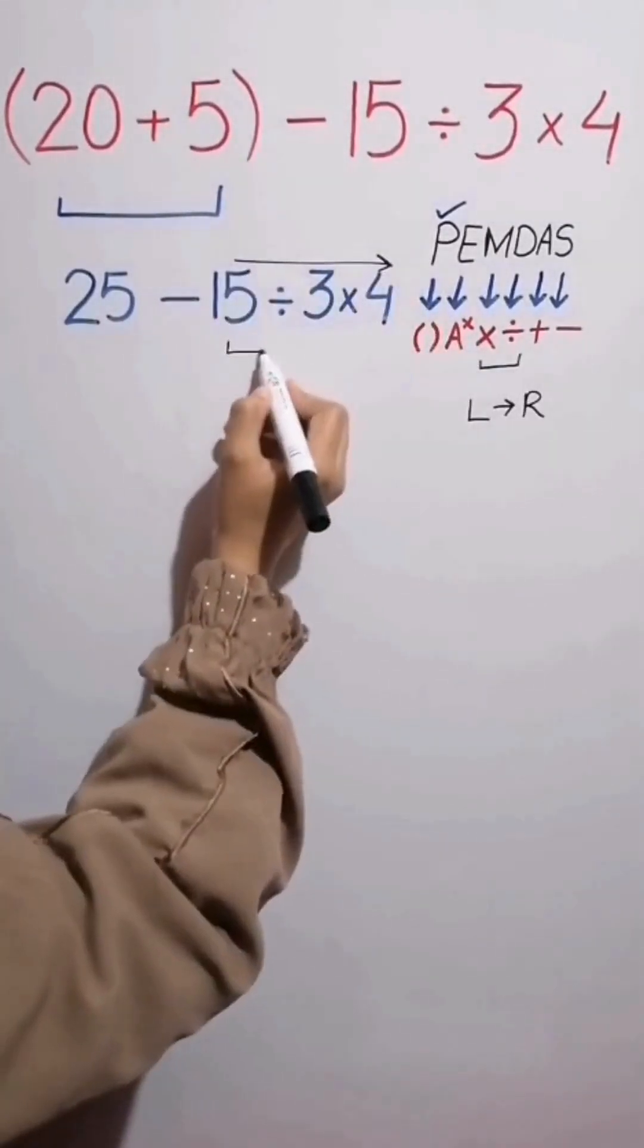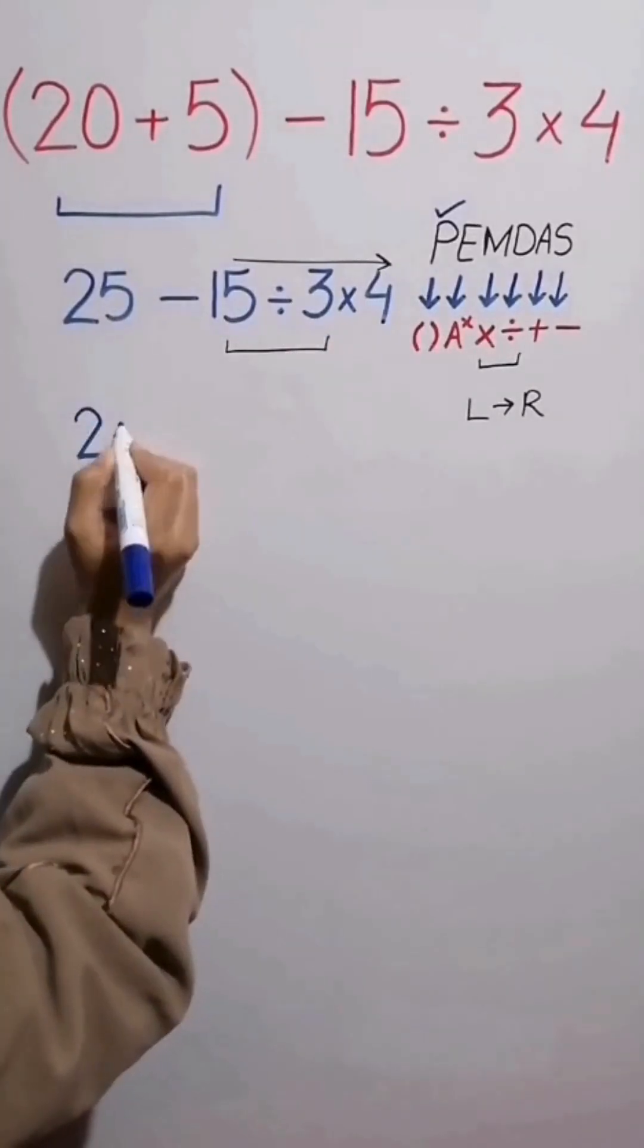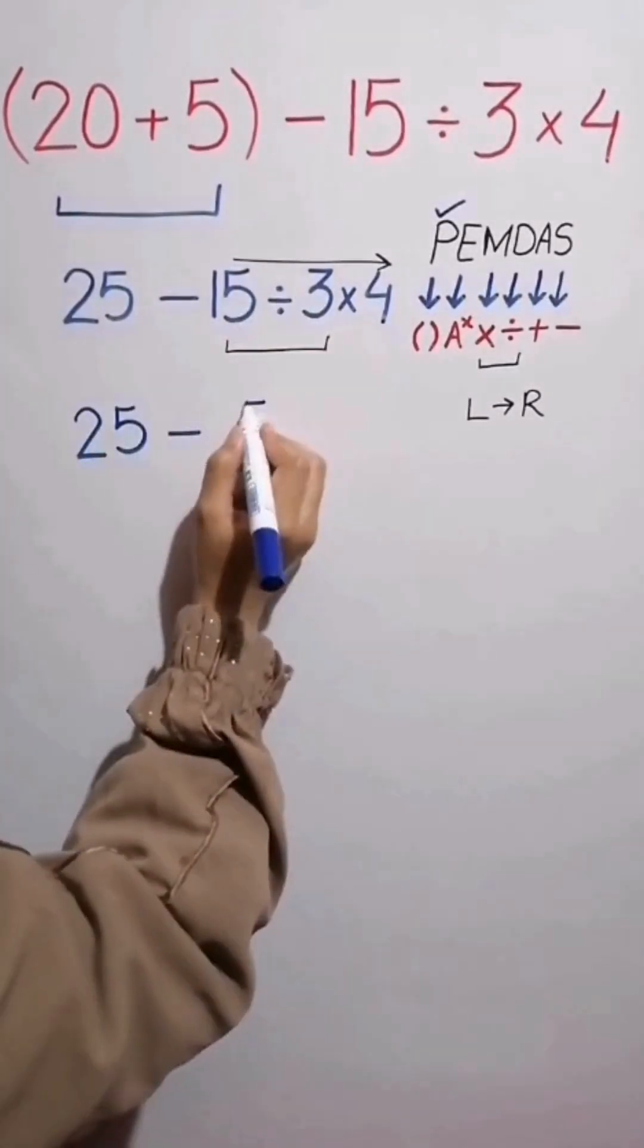So first we start with the division between 15 and 3 which simplifies the expression to 25 minus, 15 divided by 3 equals 5, then times 4.